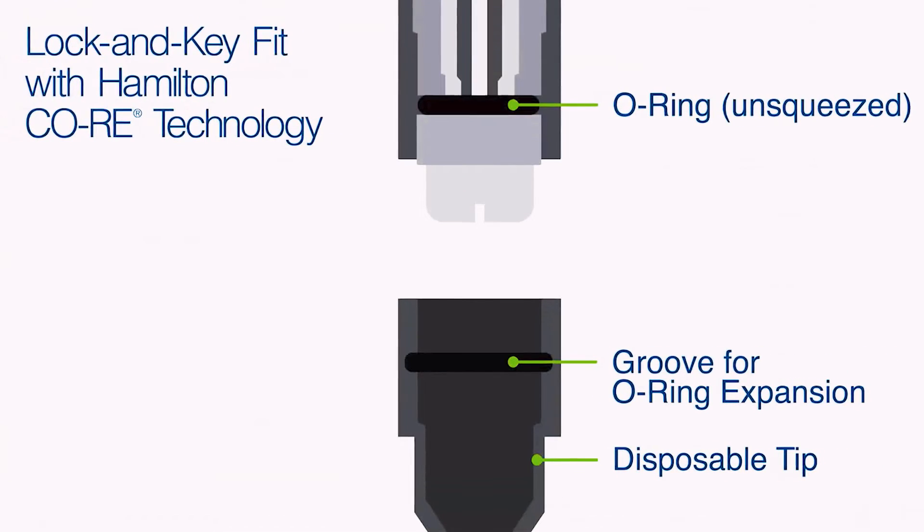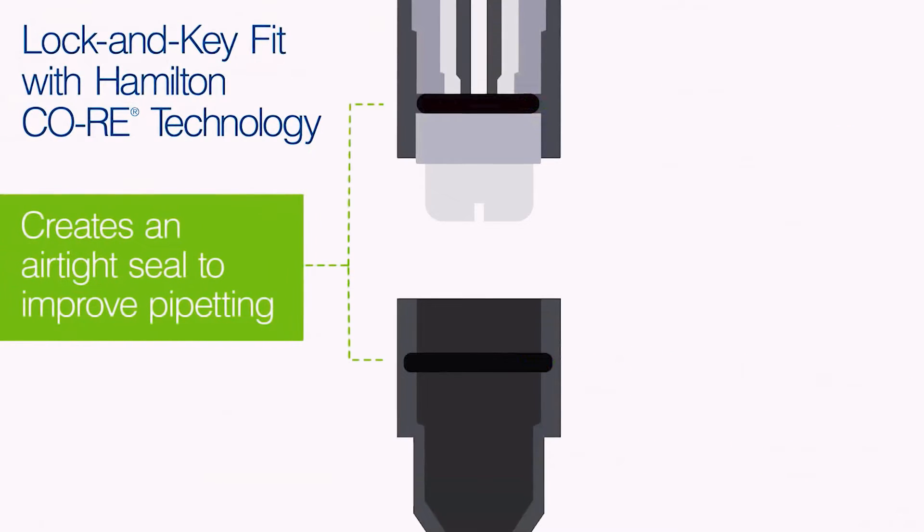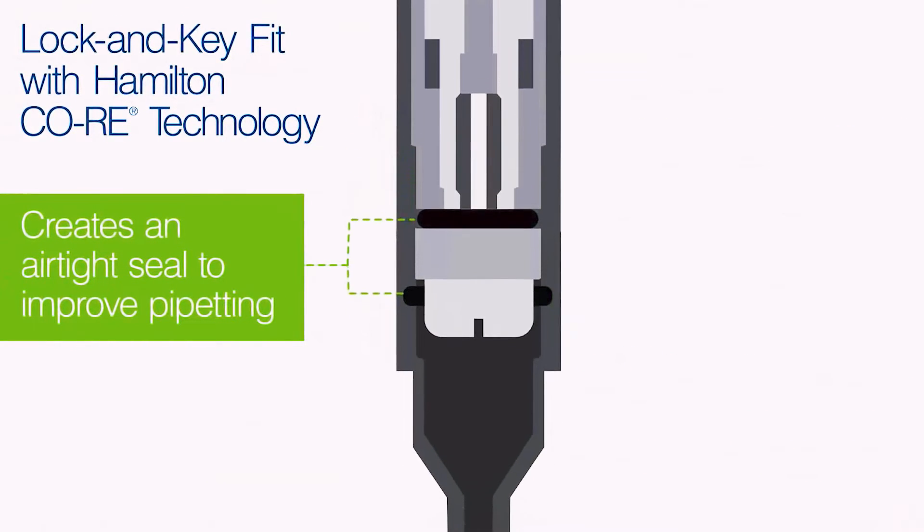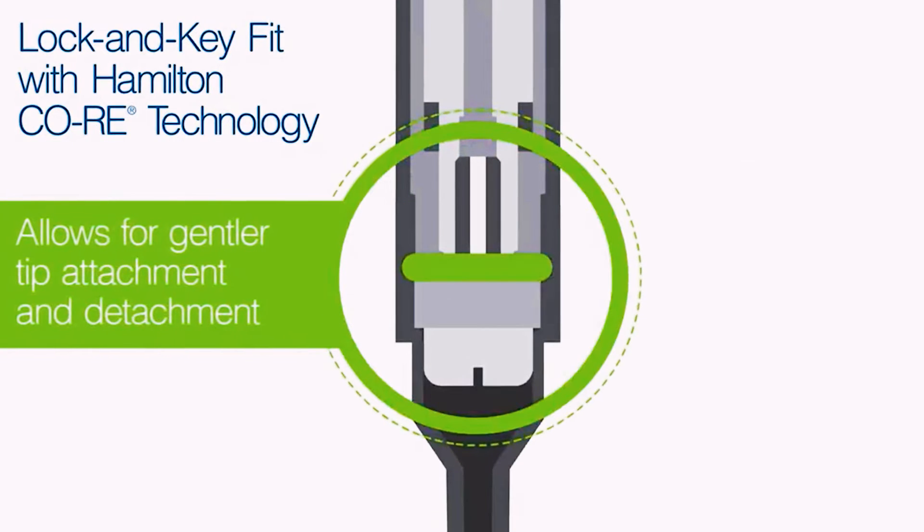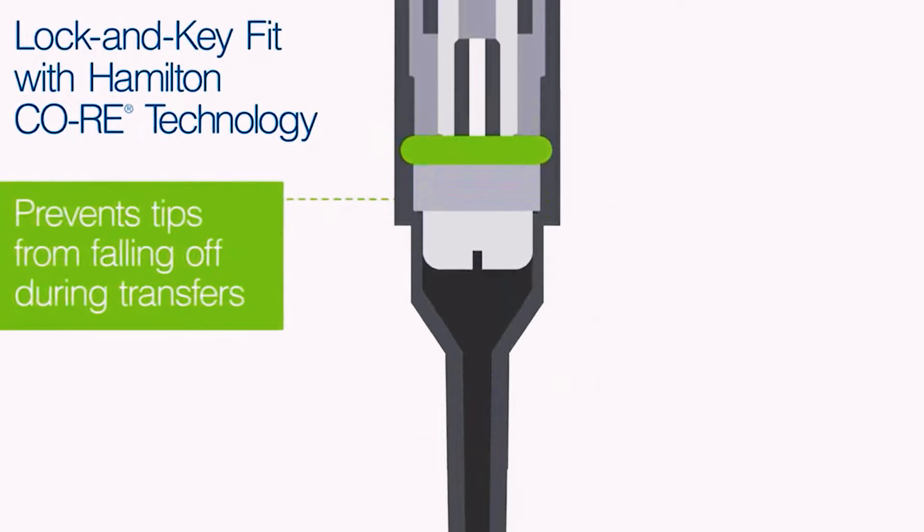Hamilton's Core Technology utilizes a lock-and-key fit design with an O-ring. Core creates an airtight seal to improve pipetting, allows for gentler tip attachment and detachment, and prevents tips from falling off during transfers.